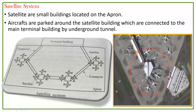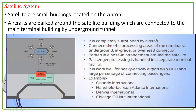The last one is the satellite system. Satellites are small buildings located on the apron. Aircraft are parked around the satellite building, which are connected to the main terminal building by underground tunnel. It is completely surrounded by aircraft, connected to the processing areas of the terminal via underground, at-grade, or overhead connections. You can see the concourse, the apron, and the aircraft parked here in a nose arrangement around the satellite. Passenger processing is handled in a separate terminal facility.